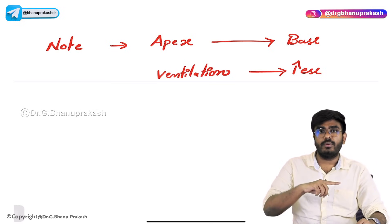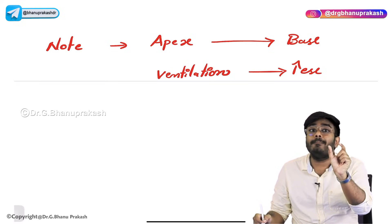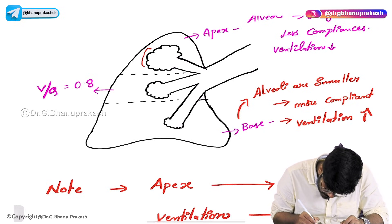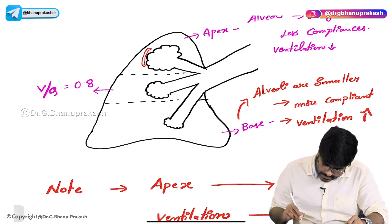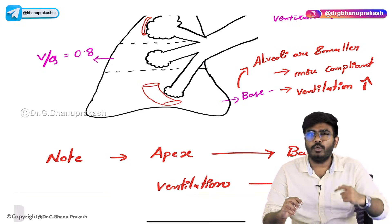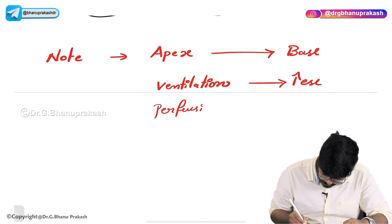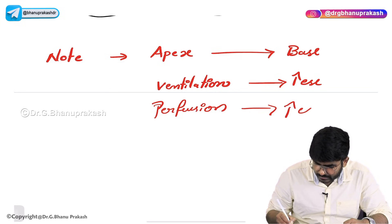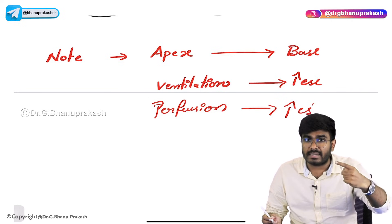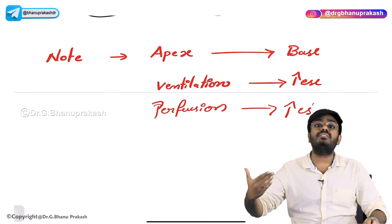In the same way, what about perfusion? As taught in the previous video, in the apex of the lung the blood vessels are compressed and smaller. In the base of the lung, the blood vessels are bigger in size — the alveoli compress the blood vessels in the apex. So when you move from apex to base, perfusion also increases. Both ventilation and perfusion gradually increase moving from apex to base.